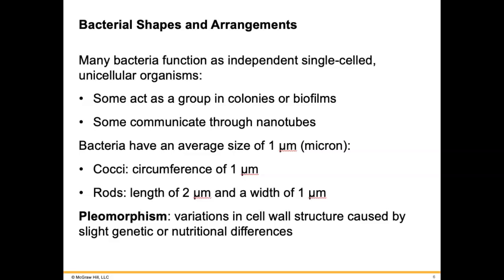Bacterial shapes and arrangements refers to the actual shape of the bacteria itself and how they are arranged. Bacteria can be arranged in groups of two, groups of four, long chains, or clusters of grape-like shapes. Most bacteria function as single-celled unicellular organisms — they're like their own individual critter. There are some that work kind of like an army, and we'll talk about those in a bit.